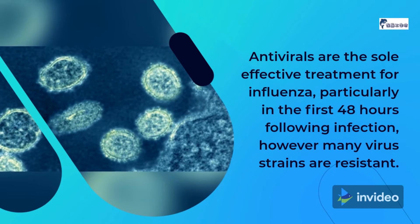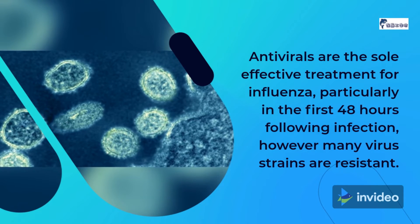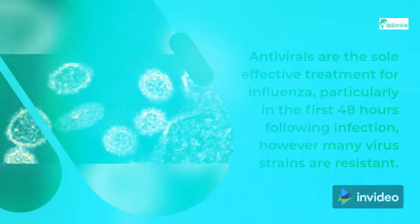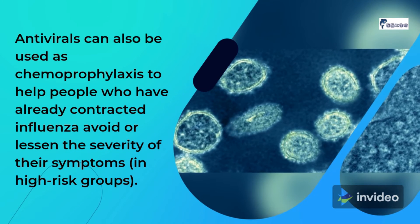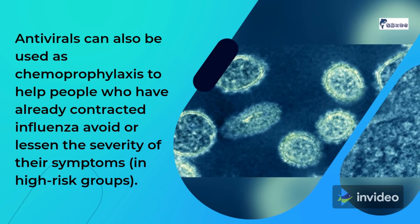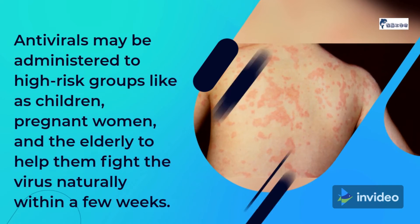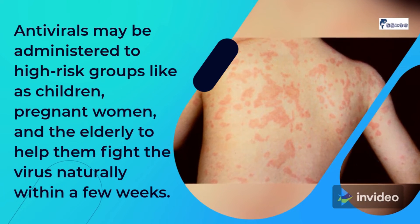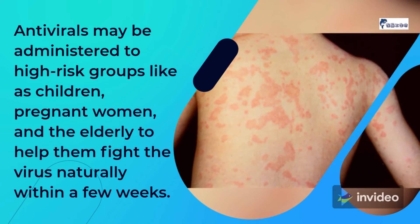Antivirals are the sole effective treatment for influenza, particularly in the first 48 hours following infection; however, many virus strains are resistant. Antivirals can also be used as chemoprophylaxis to help people who have already contracted influenza avoid or lessen the severity of their symptoms in high-risk groups. Antivirals may be administered to high-risk groups such as children, pregnant women, and the elderly to help them fight the virus naturally within a few weeks.